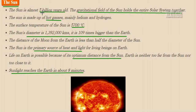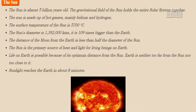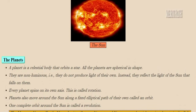The diameter of the sun is 13,92,000 kilometers, and the size of the sun is 109 times bigger than the Earth. The distance of the moon from the Earth is less than half the diameter of the sun. The sun is the primary source of heat and light in the daytime for all living beings on the Earth. Life on Earth is possible because the Earth is located at a correct distance from the sun — neither too far nor too near. Sunlight takes only 8 minutes to reach the surface of the Earth.